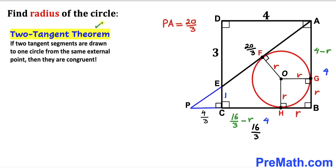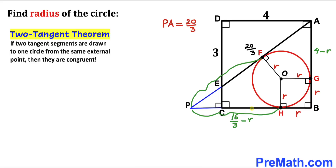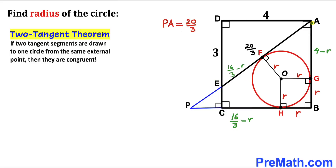Let's recall the two-tangent theorem: if two tangent segments are drawn to a circle from the same external point, they are congruent. In our diagram, the tangent from P gives PH = PF = 16/3 minus r, and the tangent from A gives AG = AF = 4 minus r.